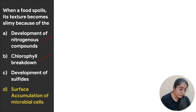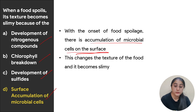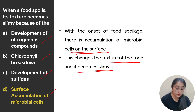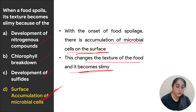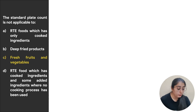Next: when food spoils its texture becomes slimy because of — nitrogenous compound development, chlorophyll breakdown, development of sulfites, or surface accumulation of microbial cells. With the onset of food spoilage there is accumulation of microbial cells on the surface, which changes the texture and makes it slimy. The correct answer is surface accumulation of microbial cells.